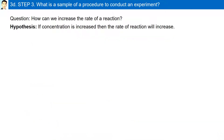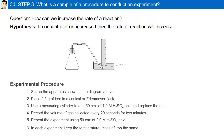What is a sample procedure to conduct an experiment? To test the hypothesis — if concentration is increased then the rate of reaction will increase — first, set up the apparatus as shown in the diagram. Place 0.5 grams of iron in an Erlenmeyer flask. Use a measuring cylinder to add 50 cm³ of 1 molar sulfuric acid and replace the bung. Record the volume of gas collected every 20 seconds for 2 minutes. Repeat the experiment using 50 cm³ of 2 molar sulfuric acid. In each experiment, keep the temperature and the mass of iron the same.